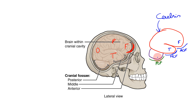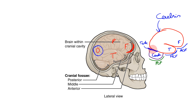On the posterior cranial fossa it is not the cerebrum but the cerebellum, along with the brain stem resting on the anterior aspect of the posterior cranial fossa. It is also important to note where the occipital lobe goes — the occipital lobe actually rests on the tentorium cerebelli, which is a dural fold that acts as a tent for the cerebellum. So the occipital lobe rests on the tentorium, while the cerebellum rests on the posterior cranial fossa.